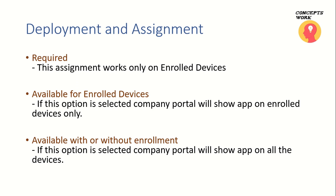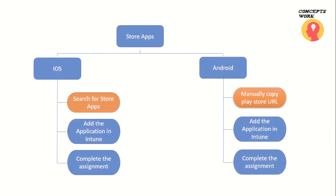Now let's look at how you add store apps in the Intune console. You can add iOS, Android, and Windows apps, but I'll be showing iOS. When you add an iOS store app, you can search for the application directly in the Intune console, select it, and it gets added. For Android, you have to manually go to the Play Store, copy the address, place it in the configuration, and then the application is added. Then you can choose any assignment type: required, available with or without enrollment, or available only to enrolled devices.